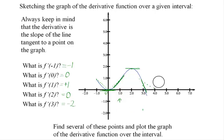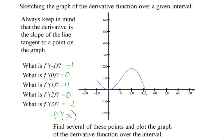Now I have five points that lie on the graph of my derivative function, F prime of x: the points negative 1 comma negative 1, zero comma zero, one comma one, two comma zero, and three comma negative 2. Let's plot those points on the same graph here as the original function F of x.